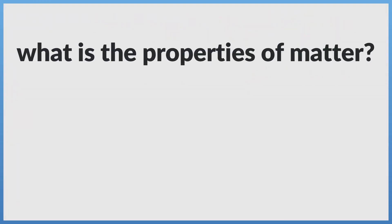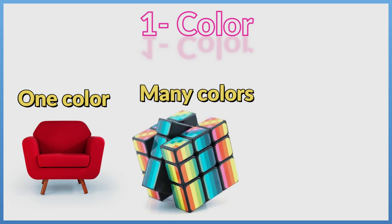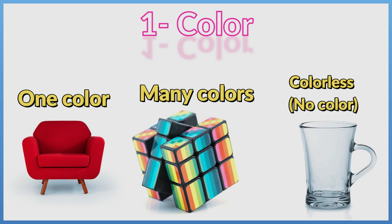What are the properties of matter? Properties of matter include: 1. Color. Matter may be colored with many colors or be colorless.